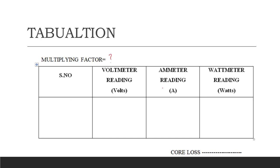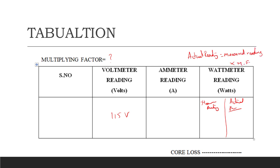You have to find the multiplication factor and corresponding voltmeter and ammeter readings. Set the rated voltage — for example, 115 volts — and measure the wattmeter readings. The actual reading is the measured reading multiplied by the multiplication factor. The actual reading will be the core loss value. This is what the open circuit test on a single-phase transformer is about.